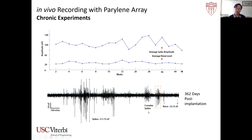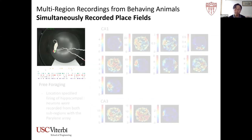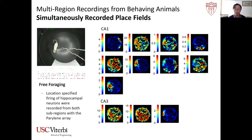We also recorded the animals' movement trajectories while they moved freely in an open field. Location-specific firing — the famous place cell property of hippocampal neurons — was recorded from these animals, and place fields were observed from both the CA1 and CA3 regions.